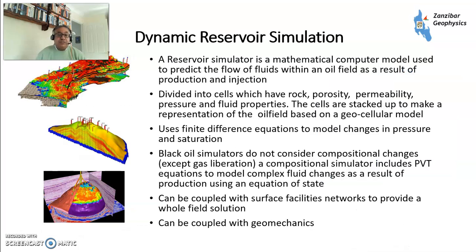Then you move to the realm of dynamic simulation. You've got a static model and you're happy with it — now you need to figure out what's going on in terms of production. You initialize the model. There are different types of simulators: black oil, which looks at a pure oil phase, and compositional, which accounts for compositional changes within the model. This is where PVT comes in as a key component. You can also couple the model with surface facilities and geomechanical models — it can get really complicated — and it's there to give you a forecast of what's likely to happen.